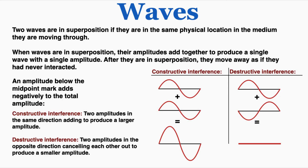Destructive interference is what happens when two amplitudes in the opposite direction cancel each other out to produce a smaller amplitude. You can see in the picture on the right, if we superimpose those two waves, their amplitudes are the same size but in opposite directions — it's like adding an equal positive and negative number. They perfectly cancel out to produce an amplitude of zero, so that would be perfectly destructive interference.